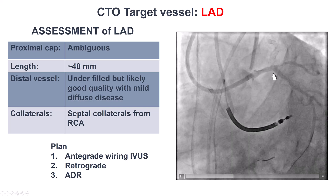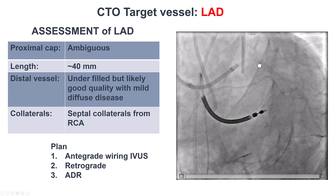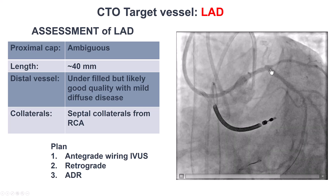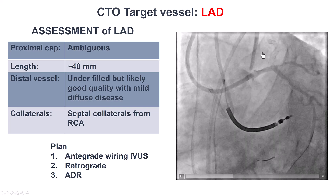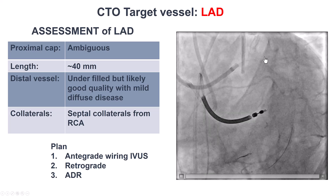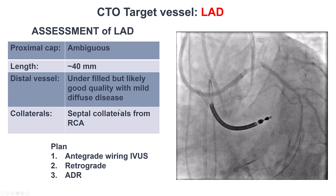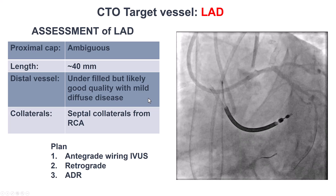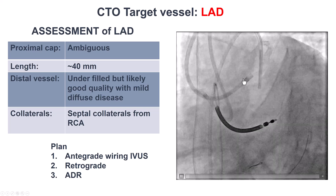So how to approach this lesion? This has a semi-ambiguous cap. We are not sure if this stump actually leads into the LAD, although we do have the stents that can serve as indicator of the vessel course. The lesion length was about 40 mm. The distal vessel was diffusely diseased, but that was likely due to underperfusion, and there was septal collaterals from the right coronary artery.